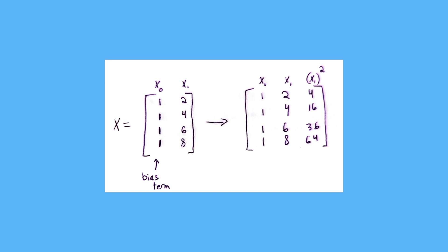Now, to get it to work for polynomial regression, we want to convert this dataset. First, you have to choose the degree of your polynomial. We'll choose degree two for a quadratic polynomial. Then you add columns for however many degrees you choose — since we chose degree two, we take x1 and add a column for x1 squared. If you chose degree three, you'd add x1 squared and then x1 cubed. So for our simple example, we transform the input matrix by adding a third column: we have 1, 1, 1, 1 for the bias; 2, 4, 6, 8 for x1; and then 4, 16, 36, 64 for x1 squared. After you transform your input matrix in this way, all you have to do is feed it into your normal linear regression training system — you can use the normal equation or gradient descent.